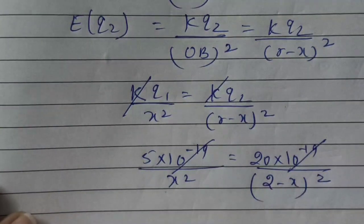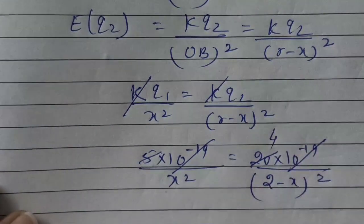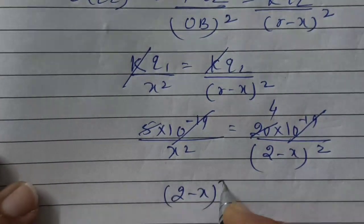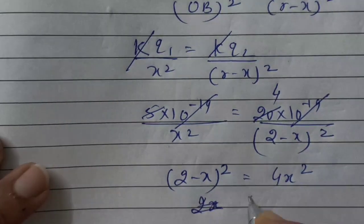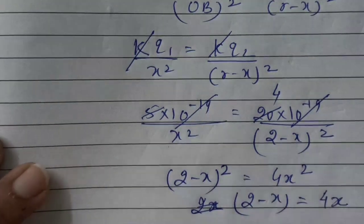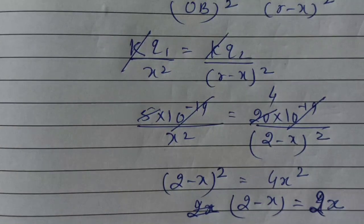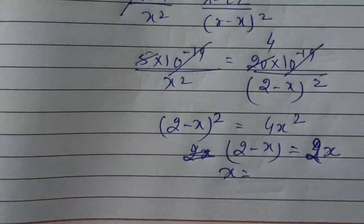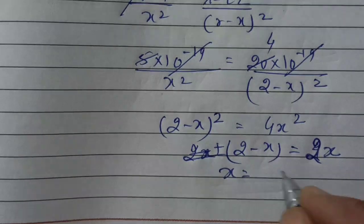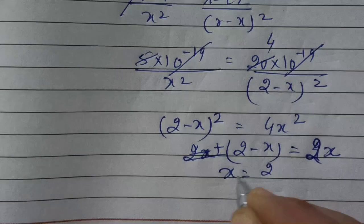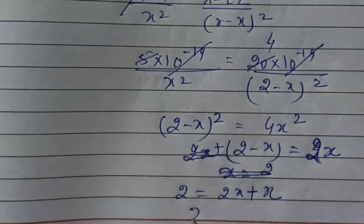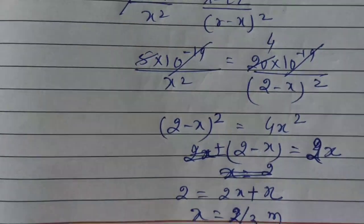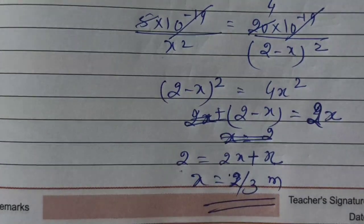The 10⁻¹⁹ cancels on both sides. Cross-multiplying gives (2−x)² = 4x². Taking square roots: 2−x = 2x. So 2 = 3x, giving x = 2/3 meter.